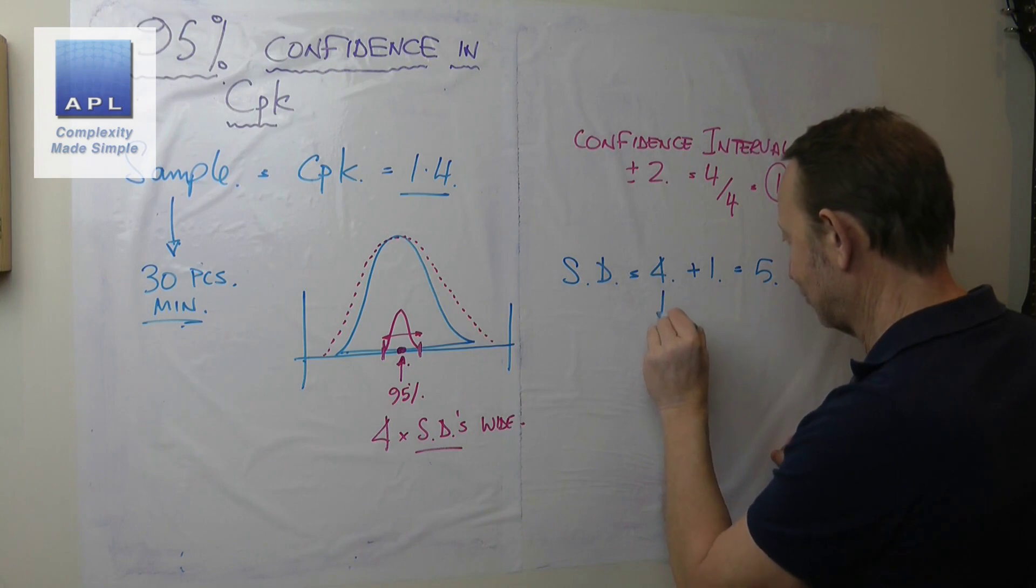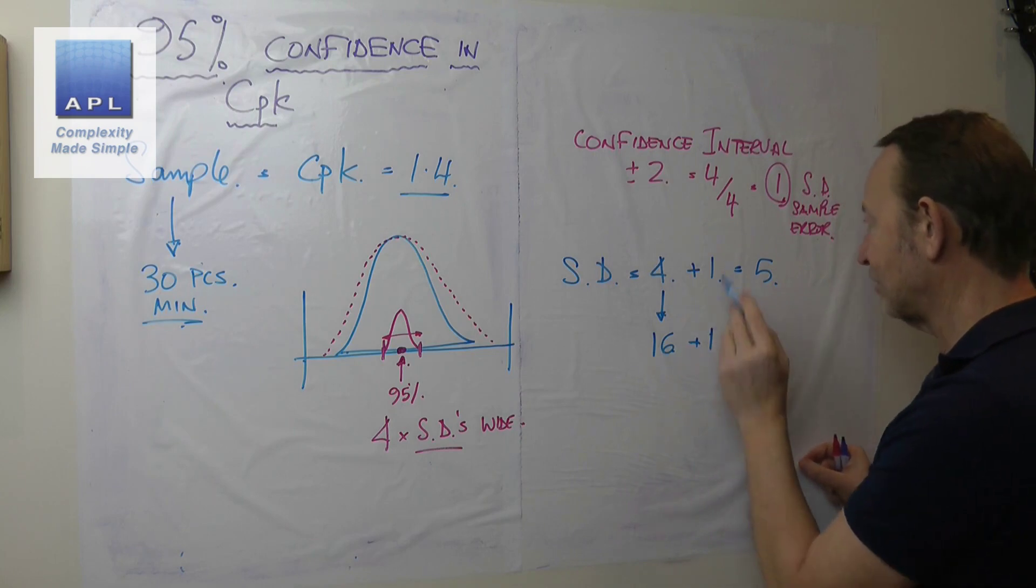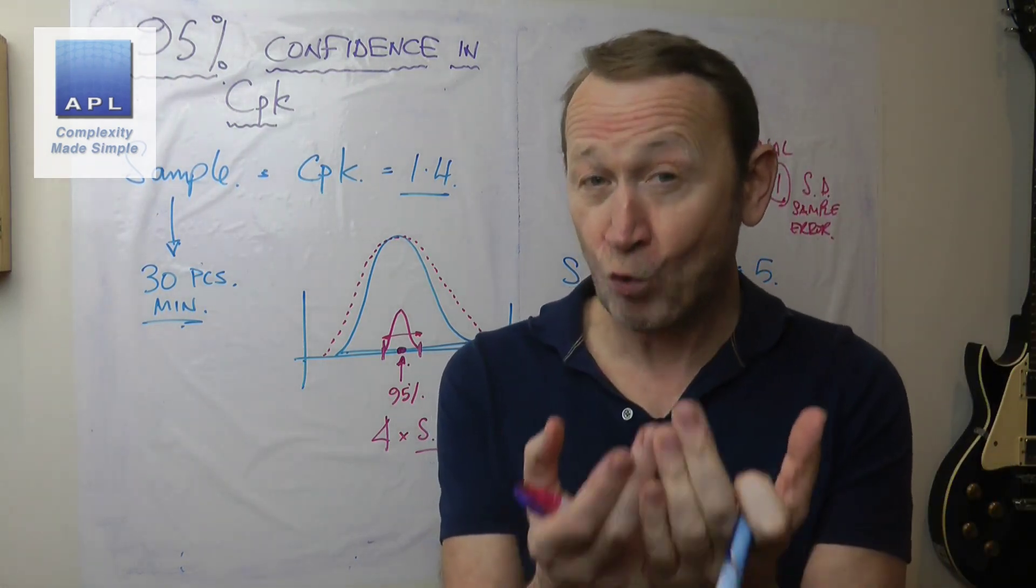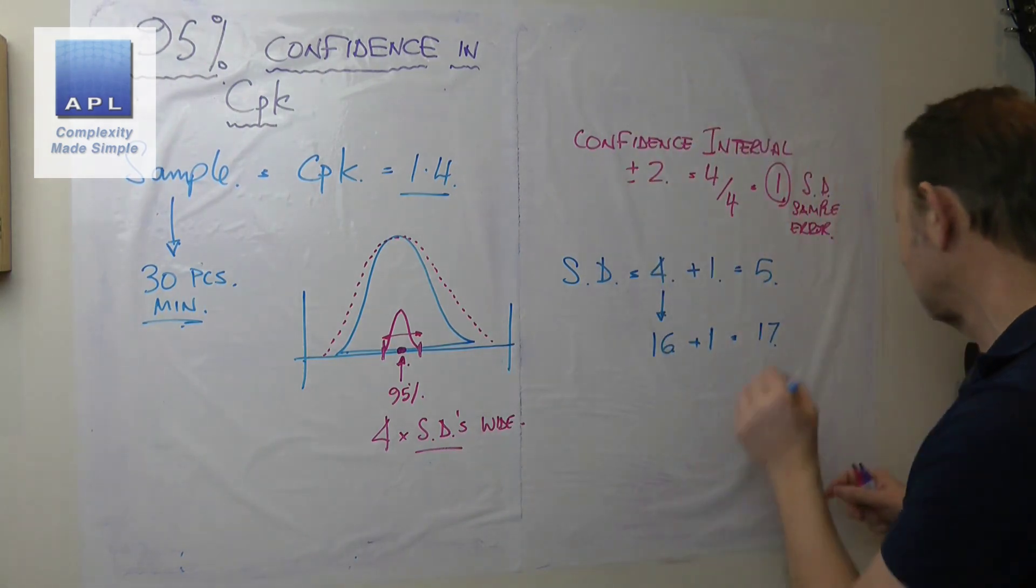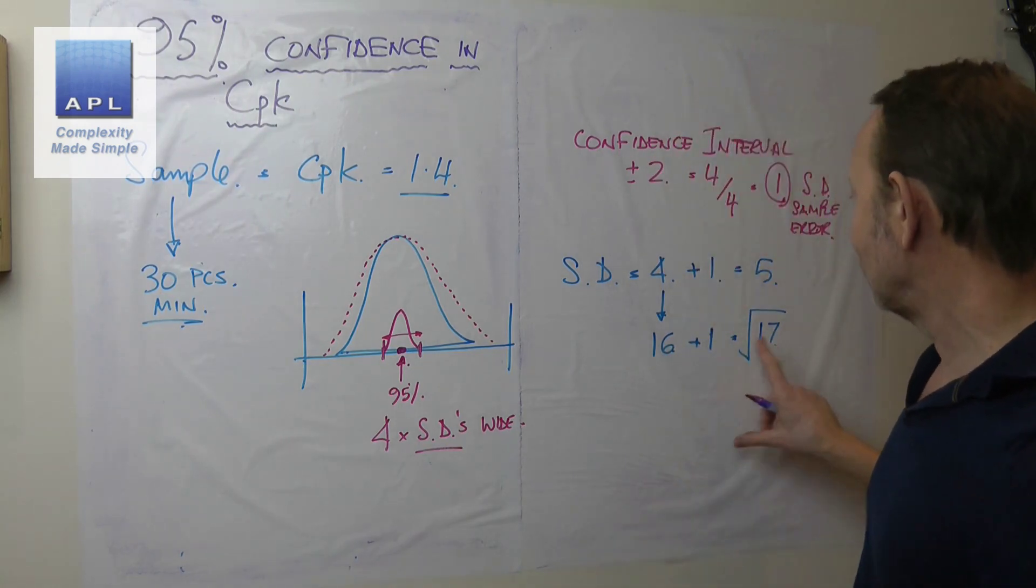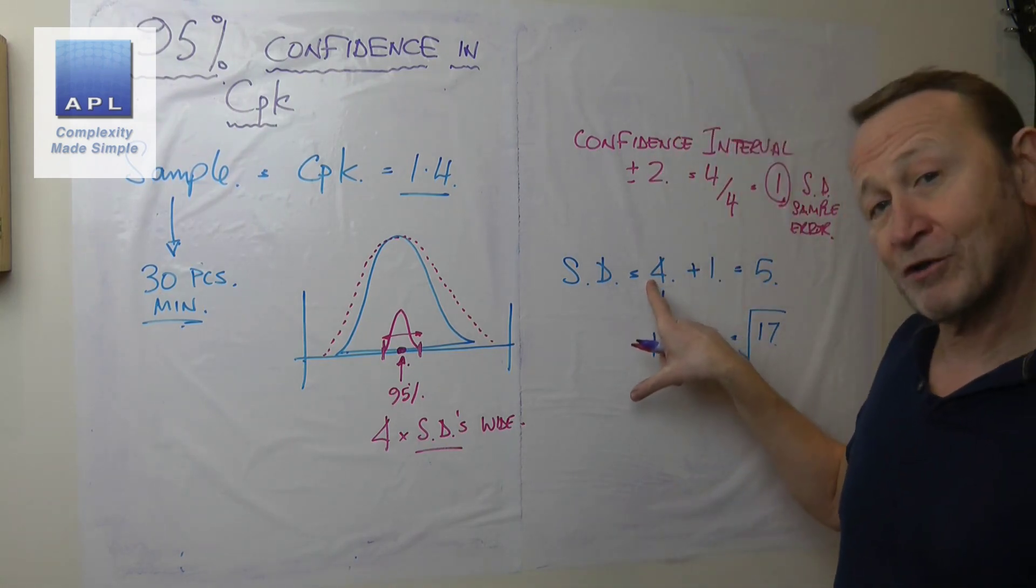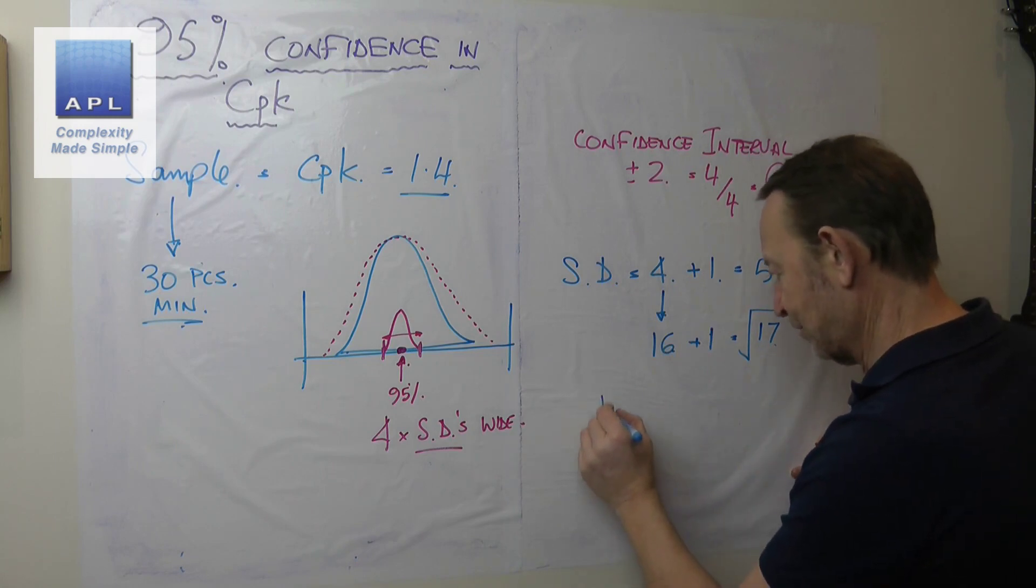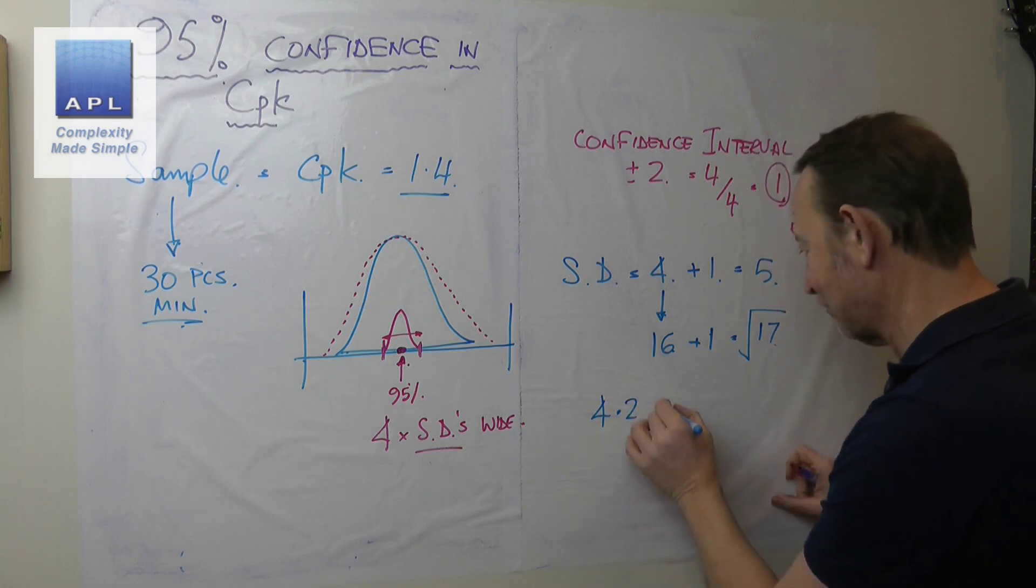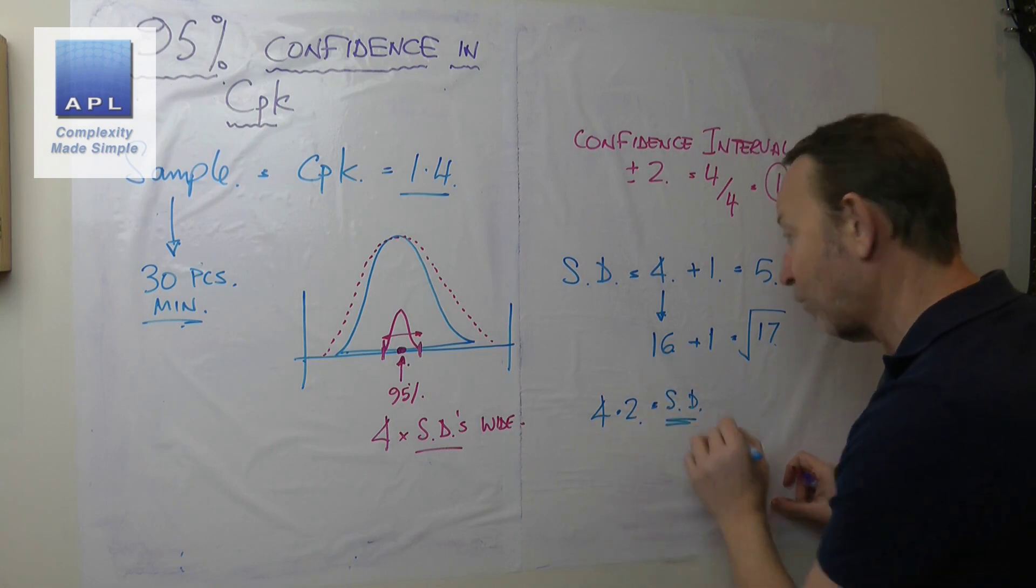The correct way to add standard deviations is like this: you square them. So four squared is 16, one squared is one, you add them together and you get 17. Now because I've added the two squared values together, I now have to take the root. You can see that when I take the root, I'm going to go back to something quite close to four. I'm going to put this down as about 4.2. So I'm going to say my new standard deviation is 4.2.